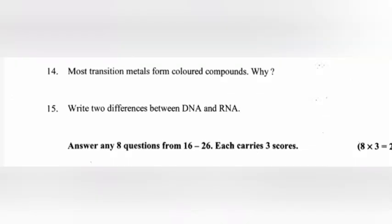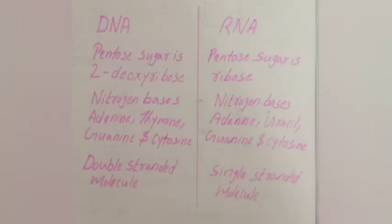Question 15: Write two differences between DNA and RNA. Answer: DNA - Pentose sugar is 2-deoxyribose. RNA - Pentose sugar is ribose. In DNA, nitrogen bases are adenine, thymine, guanine, cytosine. In RNA, nitrogen bases are adenine, uracil, guanine, cytosine. In DNA, double-stranded molecules. In RNA, single-stranded molecules.